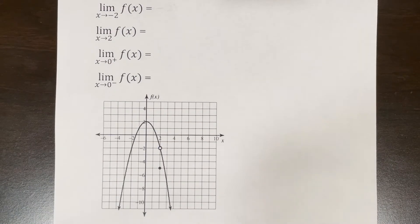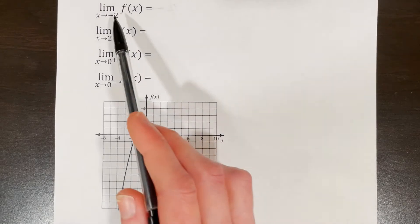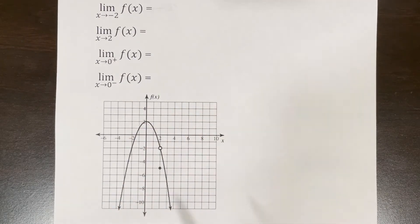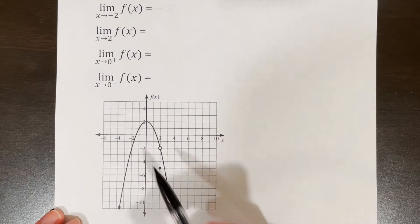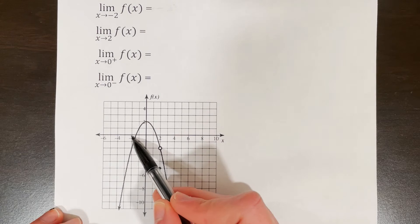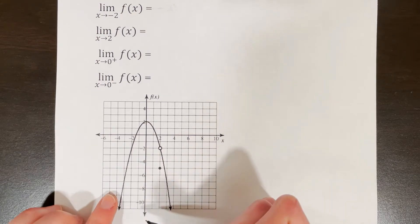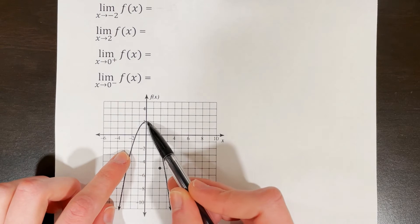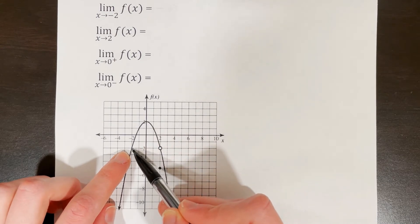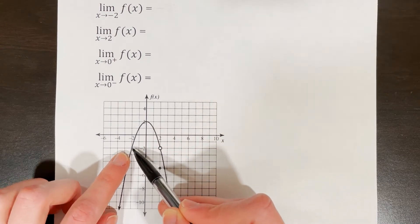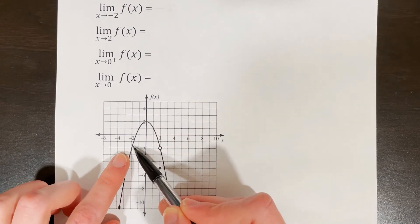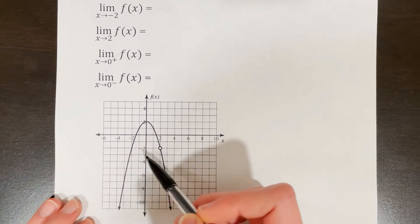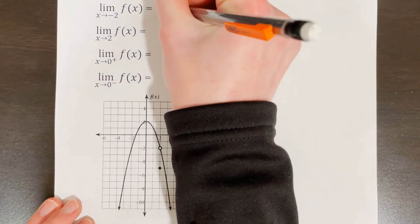Here's another graph to practice limits. The first question is the limit of f of x as x approaches negative 2. As x is approaching negative 2 from the left side, it looks like y is also approaching negative 2. And from the right side, it also looks like y is approaching negative 2. So the limit of f of x as x approaches negative 2 is negative 2.